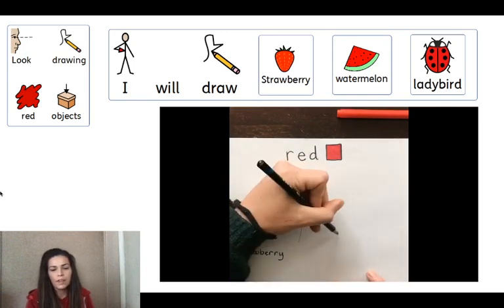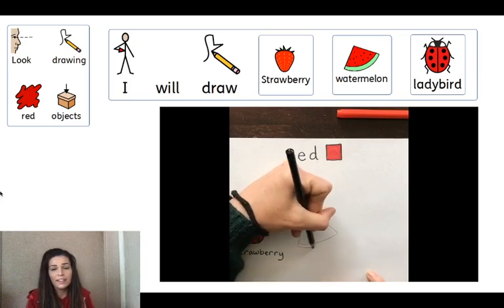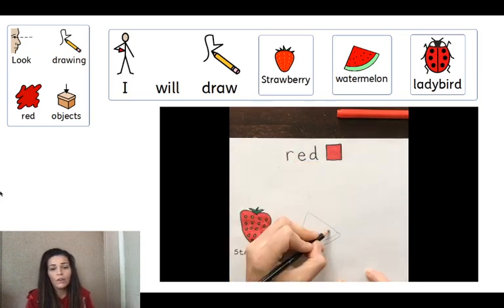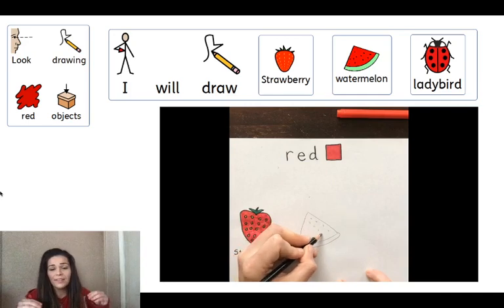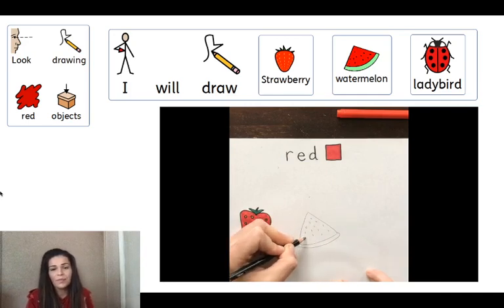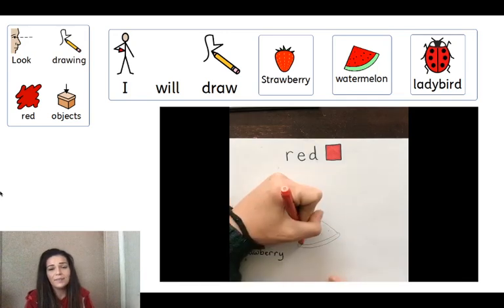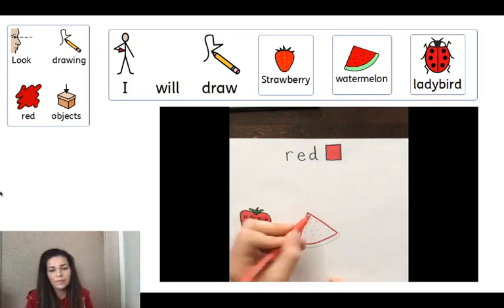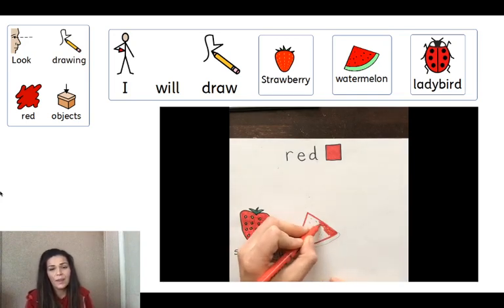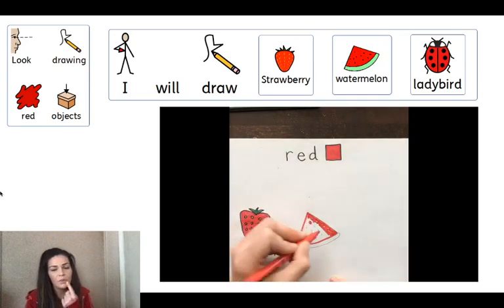The next one is a piece of watermelon. Watermelon is red inside. The outside is green. But the fruit inside is red.